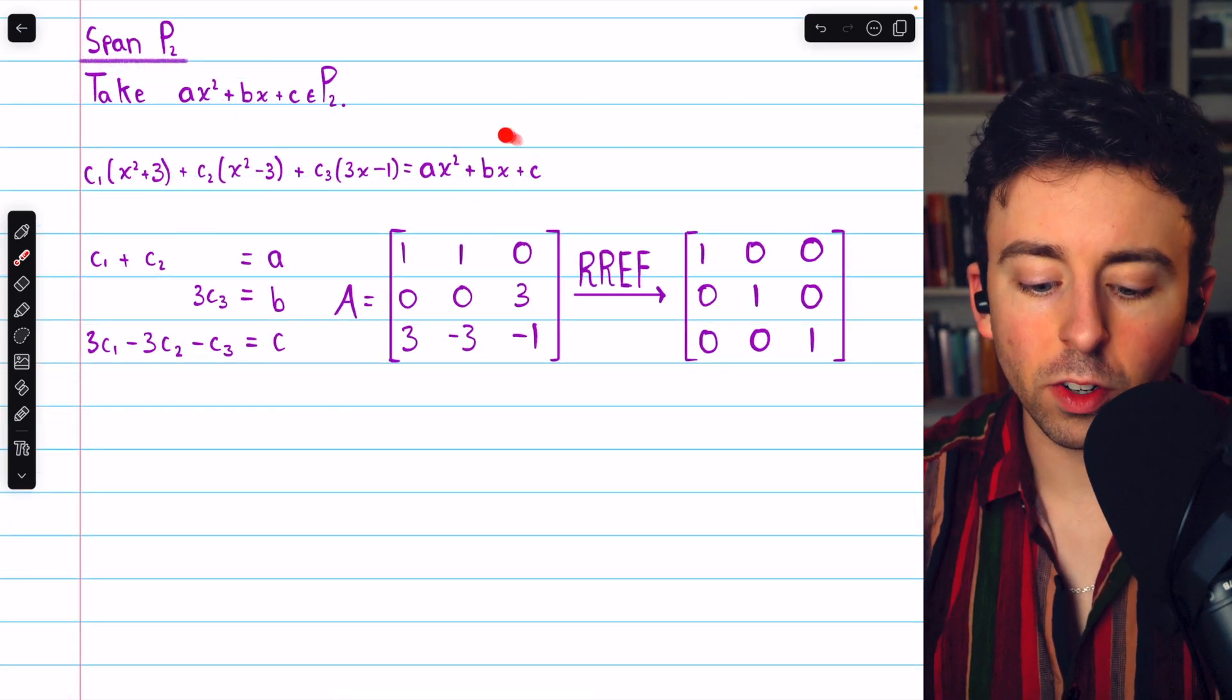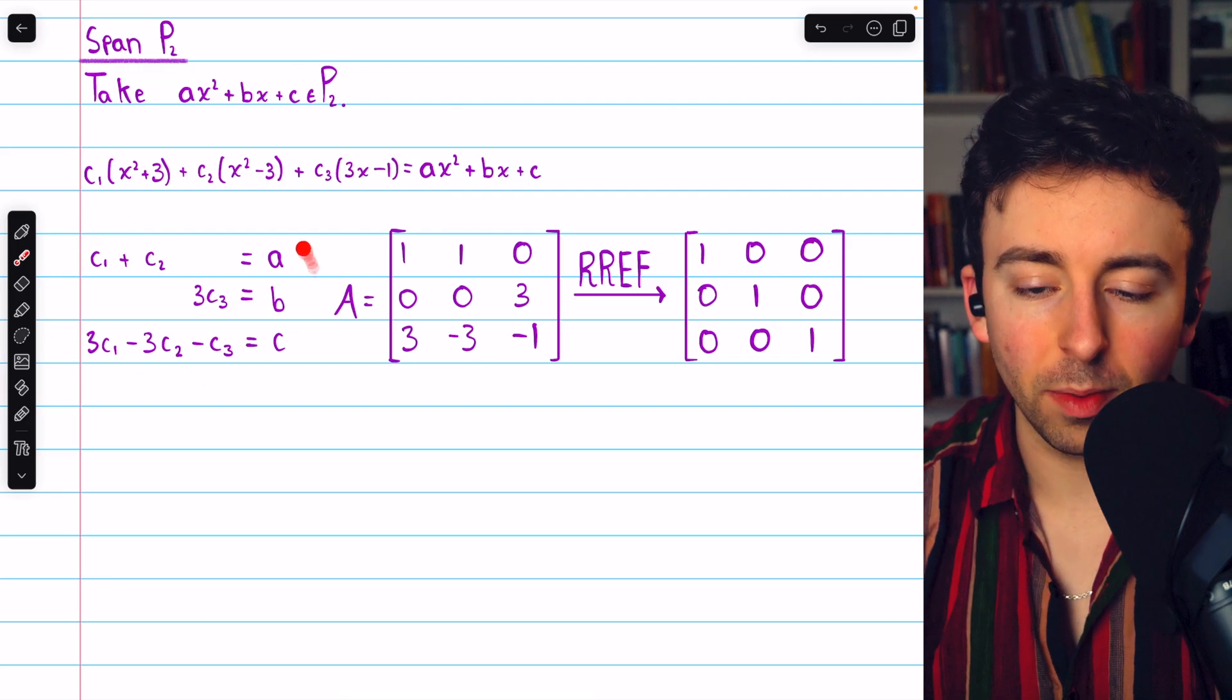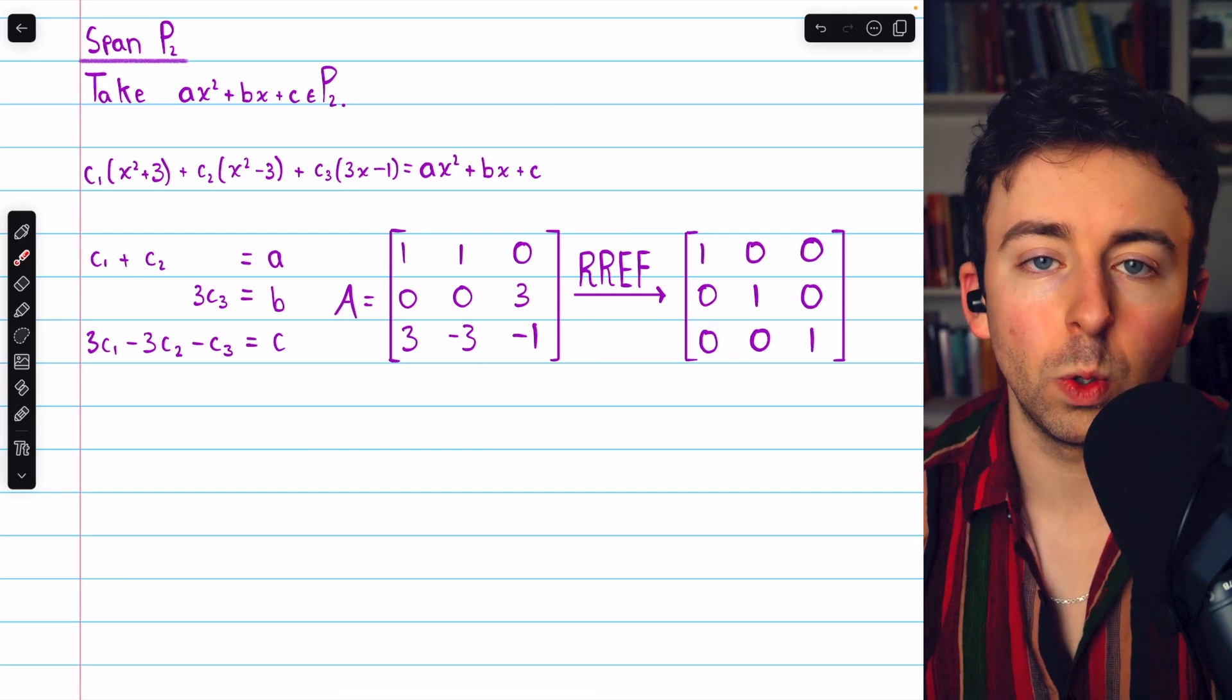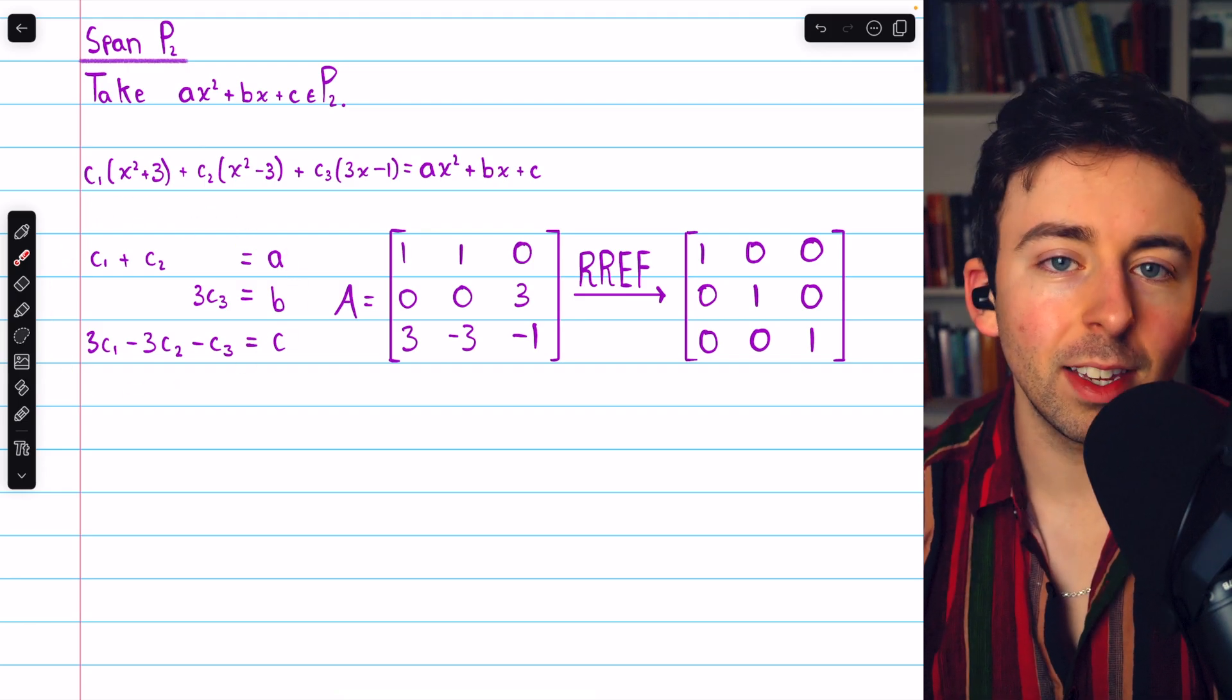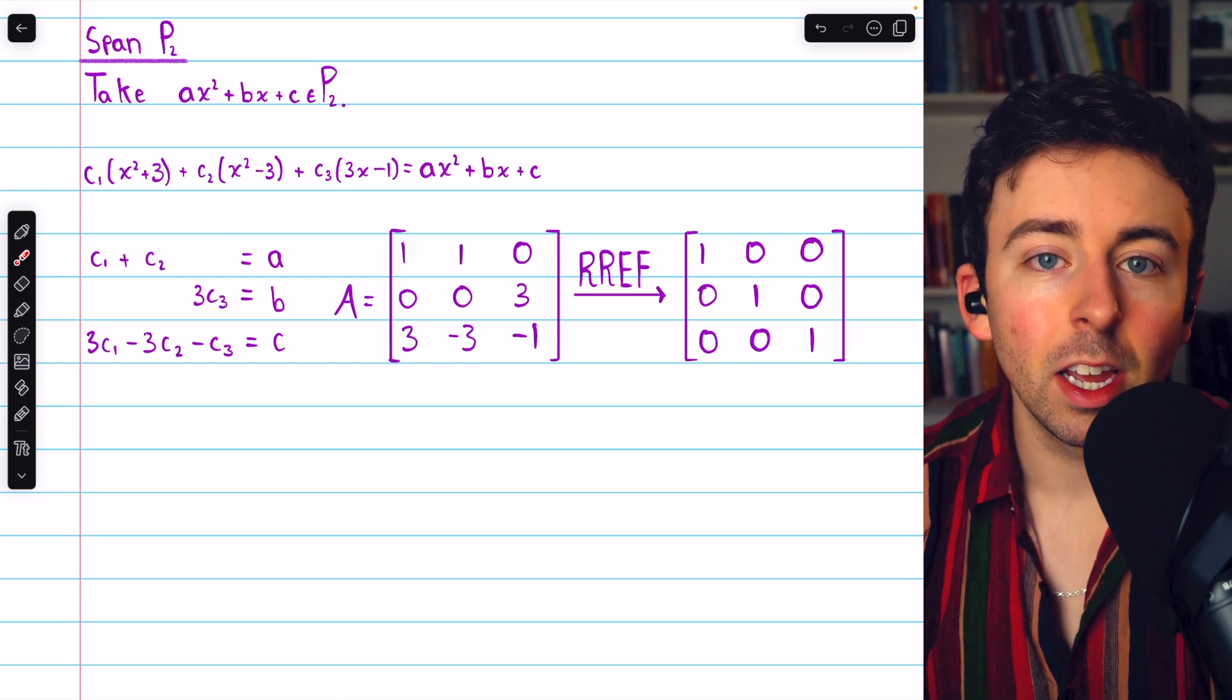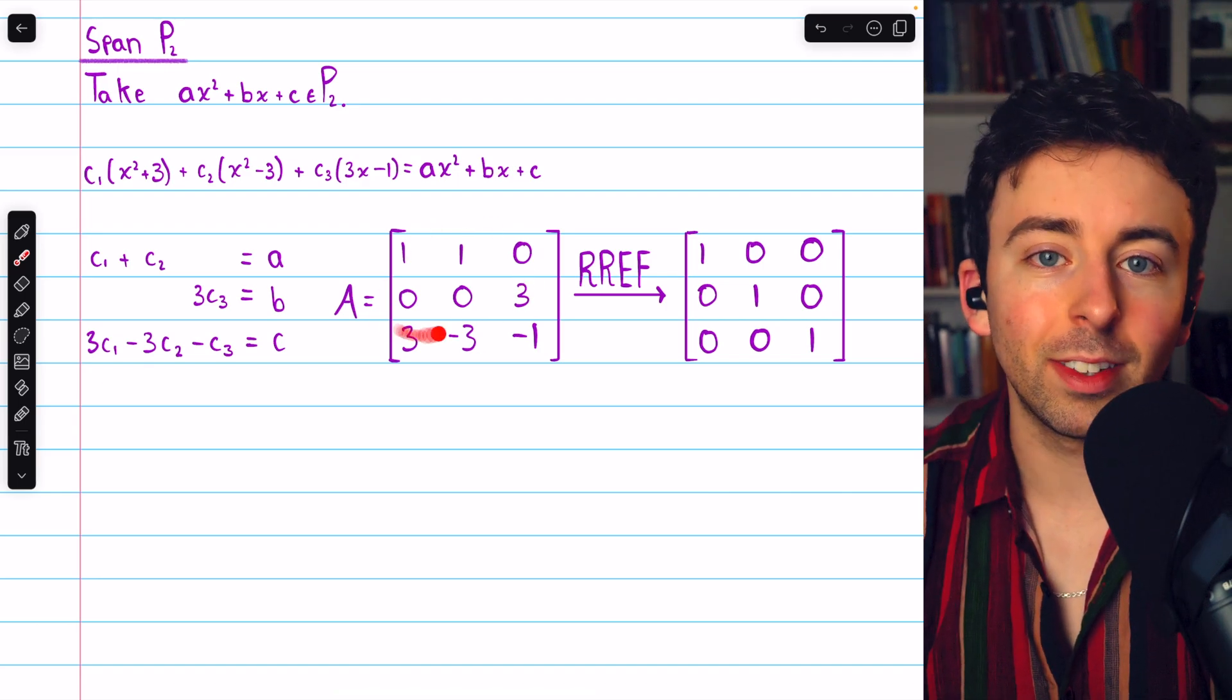by equating coefficients on the left and right side of the equation, we get this system of three equations. C1 plus C2 equals A, the coefficients of x squared, and so on for the other two equations. Then the question is simply, is this system consistent no matter what A, B, and C are? And we can determine if this system is always consistent by performing Gauss-Jordan elimination on the coefficient matrix. Notice,